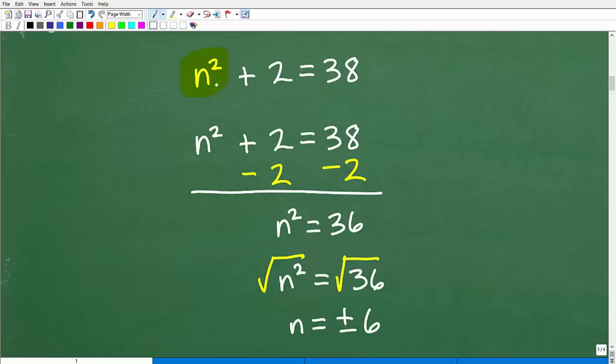Okay, so what we want to do is get the N squared all by itself on one side of the equation. So if I asked you to solve for N, if I had N plus two is equal to 38, what would you do? Well, you subtract two from both sides of the equation. So here, basically, you're kind of solving for N squared. So we're going to do the same thing. So we're going to subtract two from both sides of the equation.